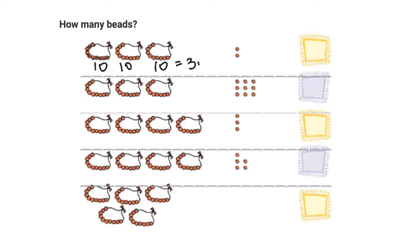Ten plus ten plus ten gives me thirty, and I have two more beads here, which is two. So thirty plus two gives me the number thirty-two.